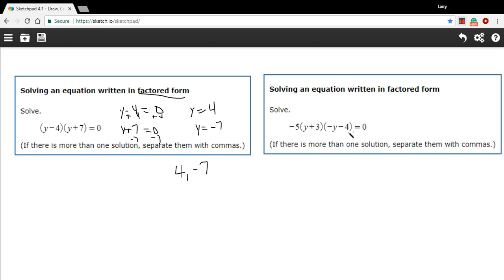Well, again, one or all or some of these factors has to be zero for this to equal zero. So it could be that negative five equals zero. Well, you know, that's not the case. So we can just ignore that part.